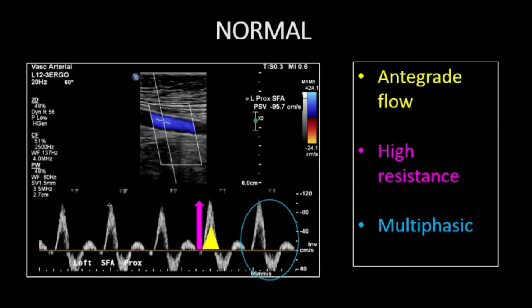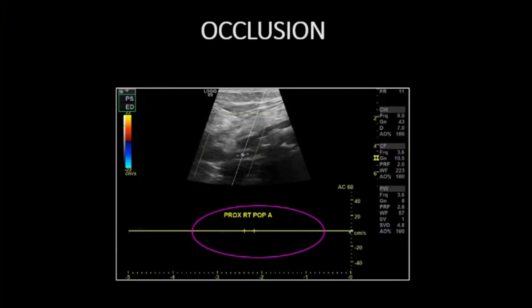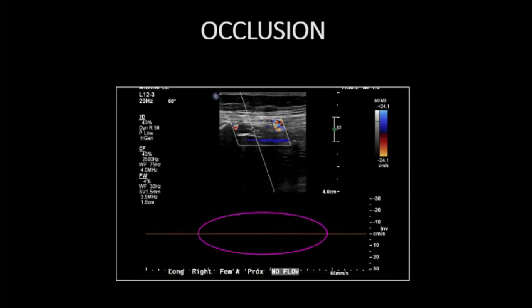To reinforce normal, again we see a multiphasic high resistance tracing with net antegrade flow and no evidence of turbulent flow to suggest stenosis. On the absolute opposite end of the disease spectrum, there's no arterial flow or spectral tracing in a case of arterial occlusion. On this color doppler, you can see color flow signal in the adjacent femoral vein, but there's no detectable flow in the SFA.